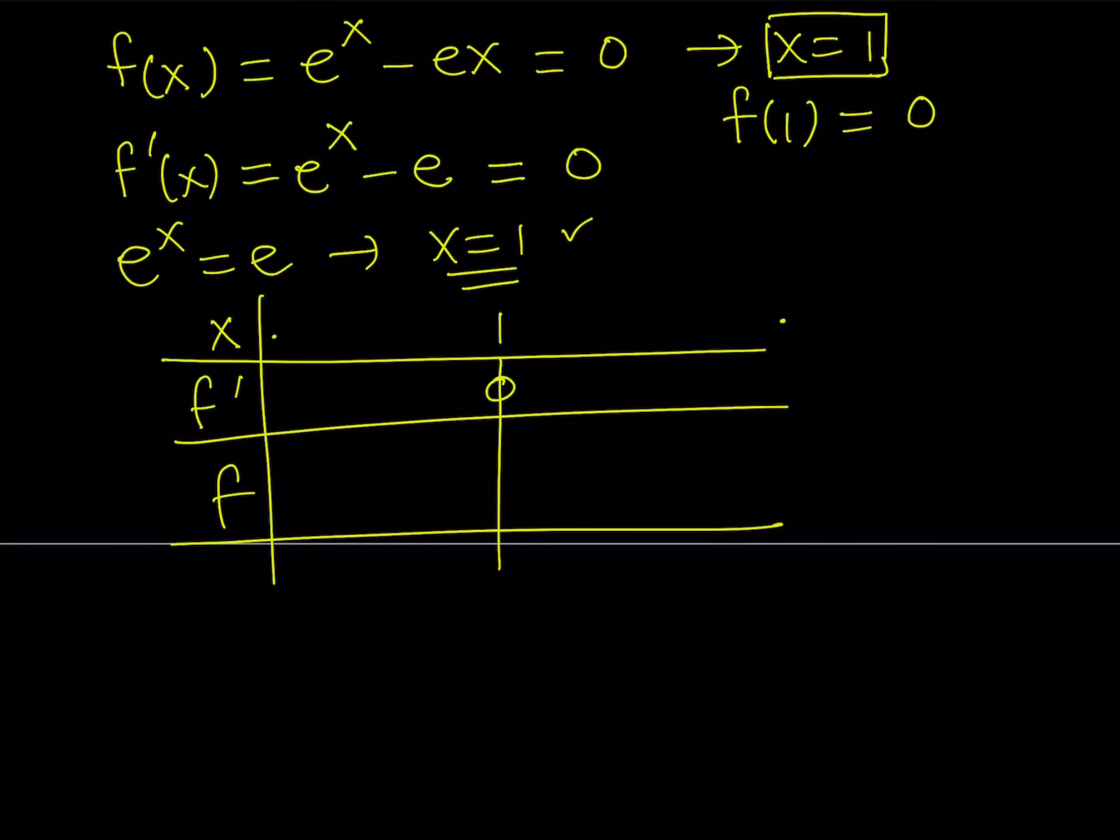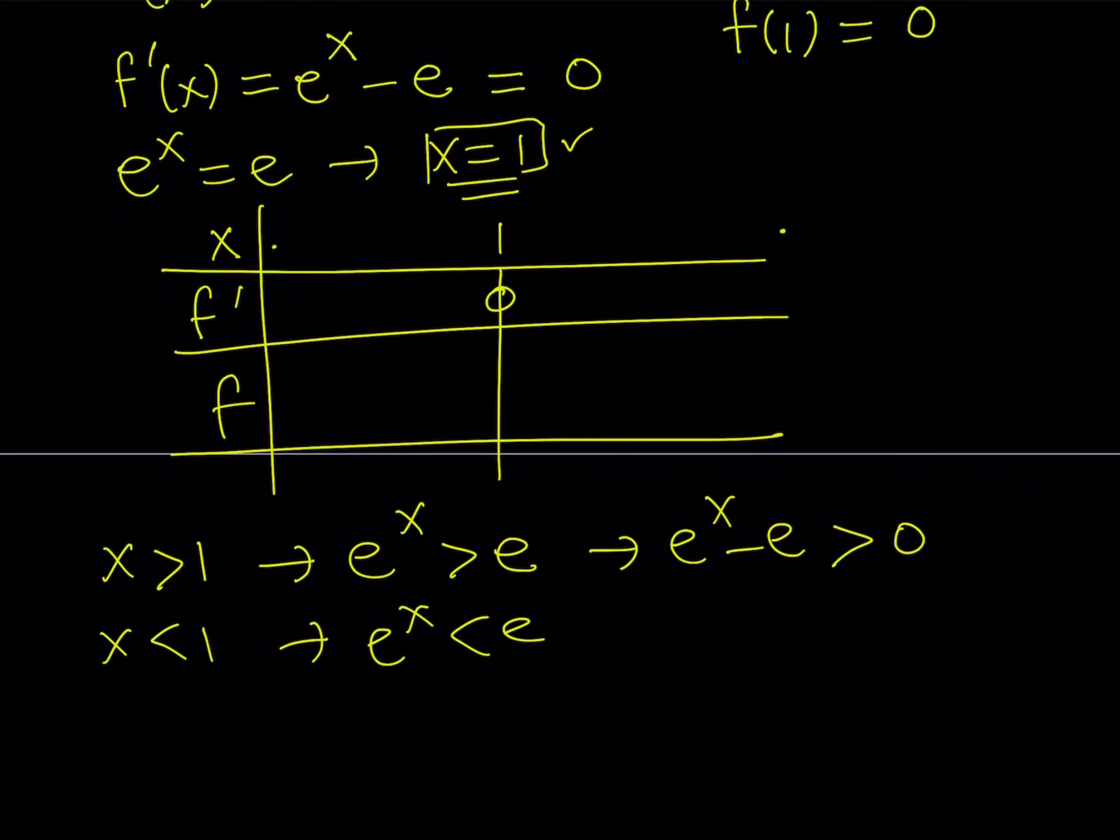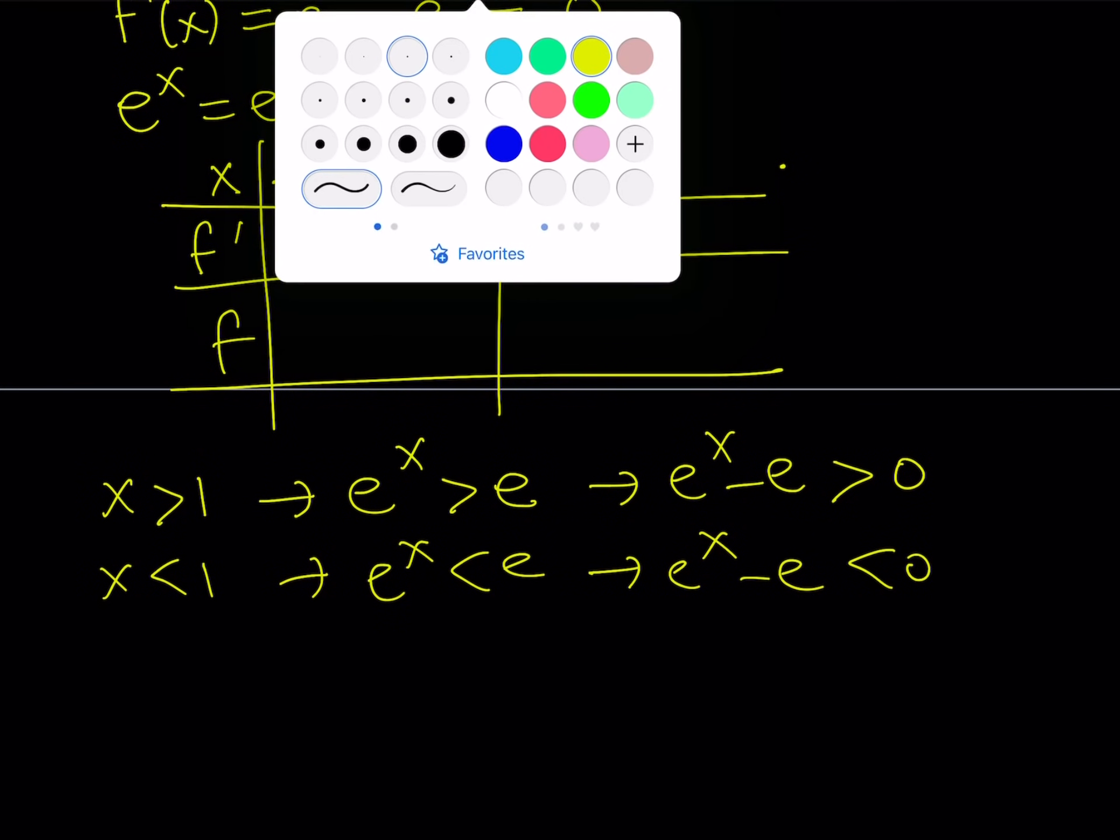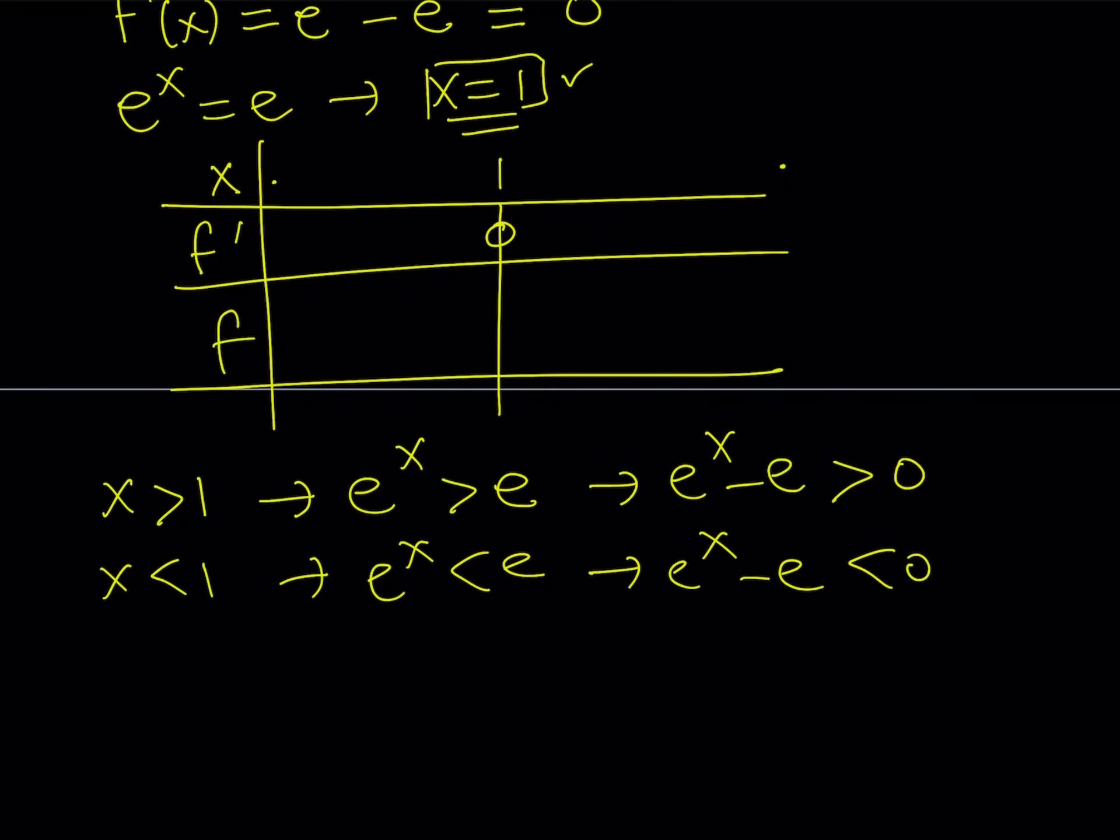Now, I need to determine whether the derivative is going to be positive or negative to the right and to the left of 1. So for that purpose, let's go ahead and take a look at it. We know that x equals 1 is a solution of the derivative. So what happens if x is greater than 1? If x is greater than 1, obviously, e to the power x is going to be greater than e. This means that e to the power x minus e is going to be positive. And if x is less than 1, then e to the power x is going to be less than e, which means that the difference is going to be less than 0. So this kind of tells us what's going to happen to the right and to the left.